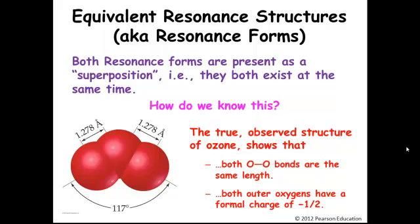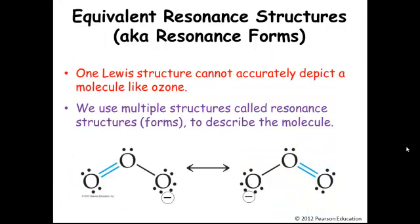Here are the two Lewis structures that we can draw that are equivalent. We call these resonance forms or resonance structures. See this double arrow in between the two molecules — that's showing that they both exist at the same time. You can kind of imagine picking up one and putting it on top of the other, since they both exist at the same time.